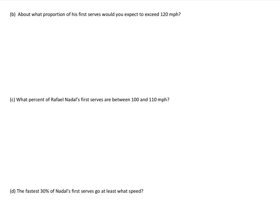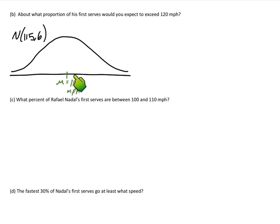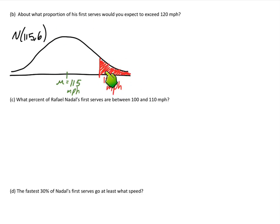Part B says: about what proportion of his first serves would you expect to exceed 120 miles per hour? Again, the very first thing — make that nice normal distribution, label it, and mark the mean right in the middle. It's normal with a mean of 115 and a standard deviation of 6. Then estimate where the boundary marker goes for 120, and shade everything above it, since we're looking at serve speeds that would exceed that number.